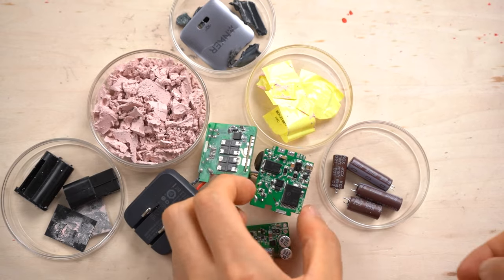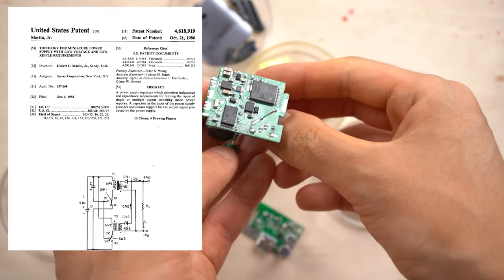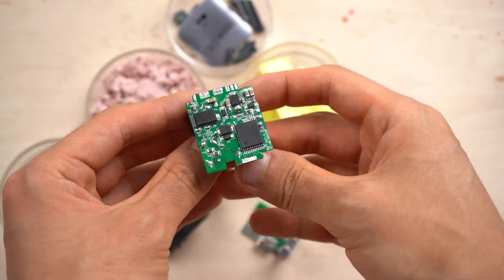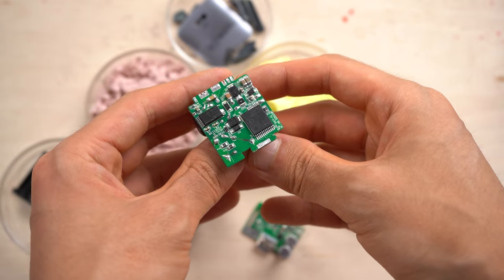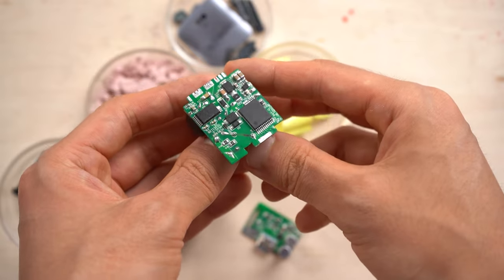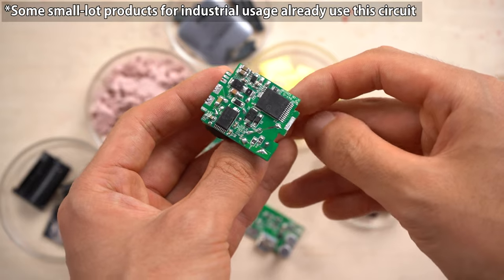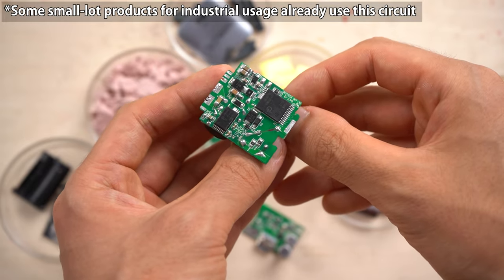The patent for active clamp flyback converter was issued in the U.S. in 1986. This circuit was invented 37 years ago. A study of this circuit started at that time. After 37 years, active clamp flyback converter is finally used in daily products like this USB charger. It took 37 years for this technology to become something that people use in daily life.